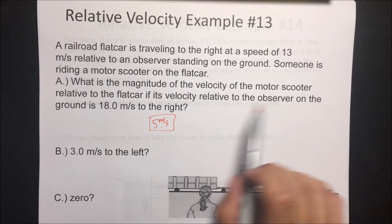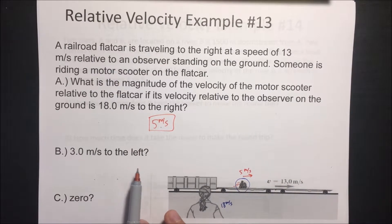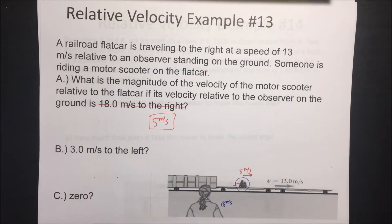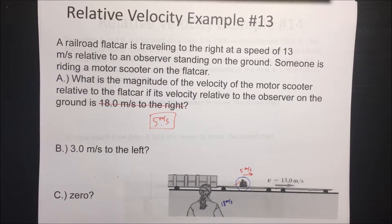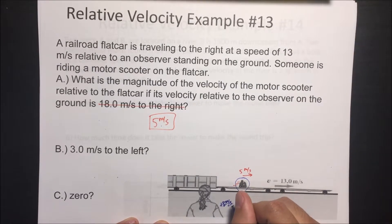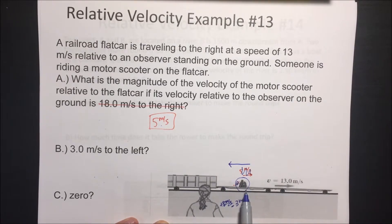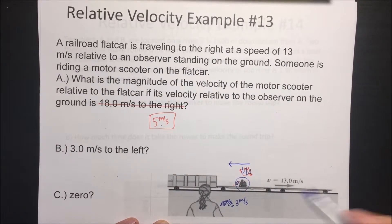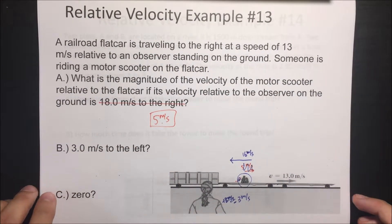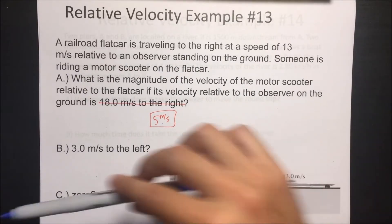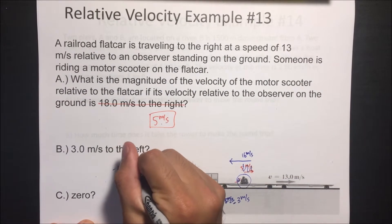What is the magnitude of the velocity of the motor scooter relative to the flat car if relative to the observer on the ground it's 3 meters per second to the left — negative 3 meters per second? That must mean the scooter is going to the left, faster than the railroad. It has to be going the other direction at 16 meters per second, so negative 16 meters per second.